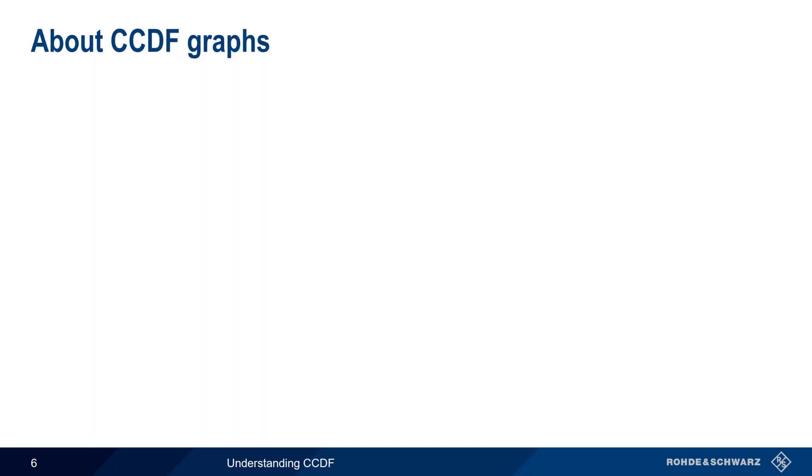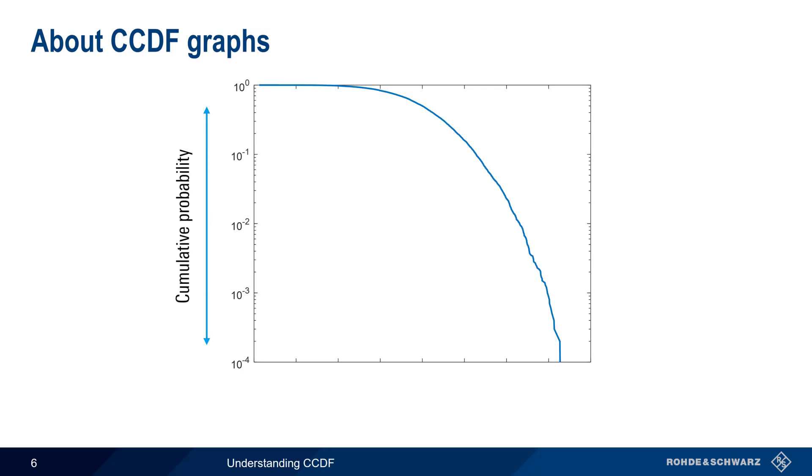Let's take a closer look at the CCDF graph. The y-axis is cumulative probability and is usually plotted on a log scale. The x-axis is power and can be plotted in two different ways. One way is to use absolute power values, say from minus 30 dBm to plus 20 dBm. The second way is to use relative power values, where the origin of the graph is defined as the average power or 0 dB and values on the x-axis are dB above average power.